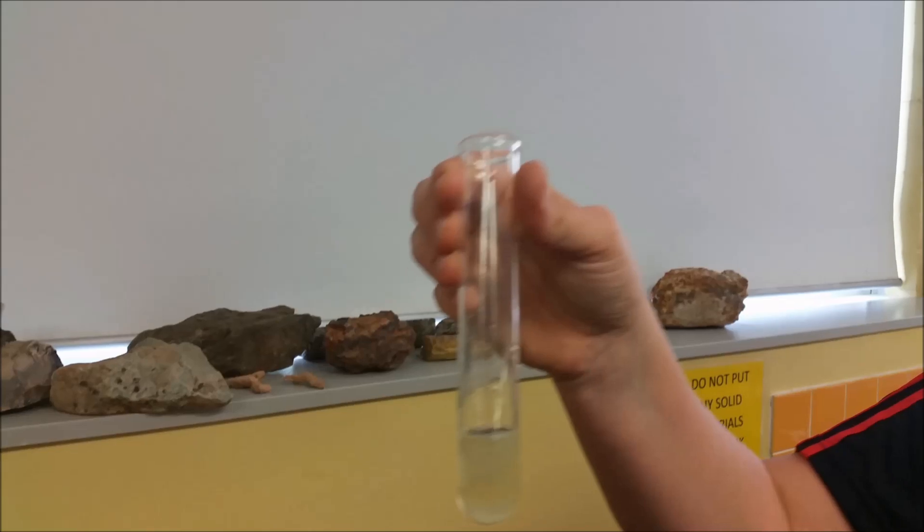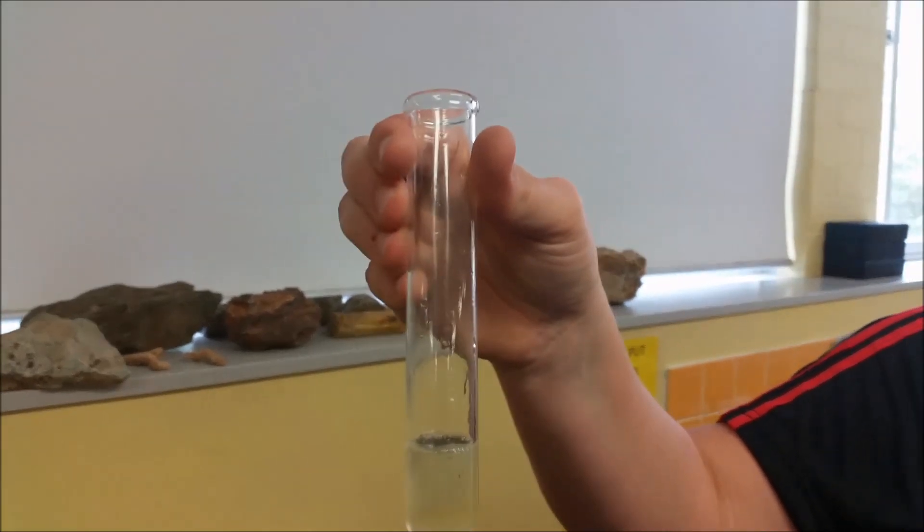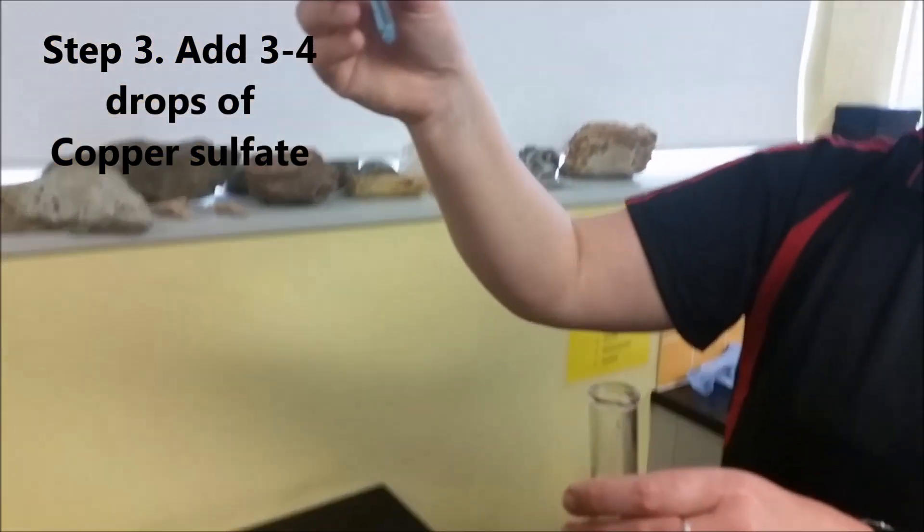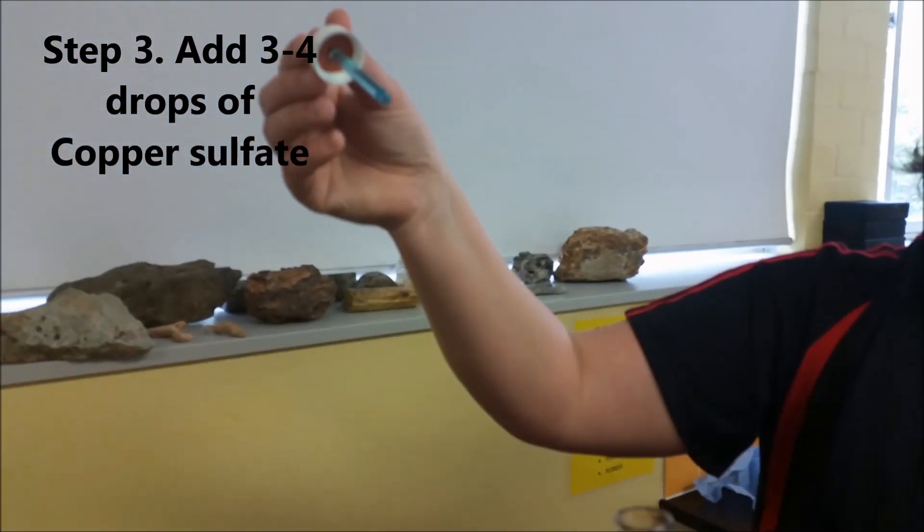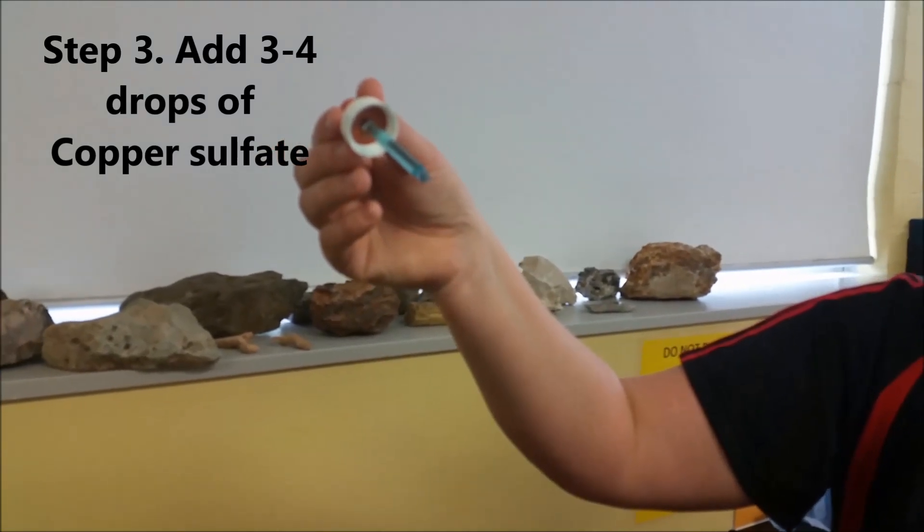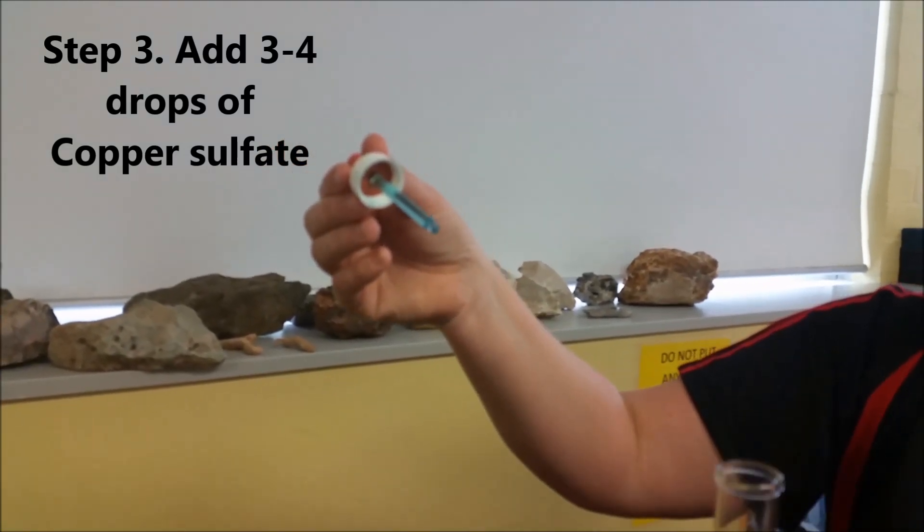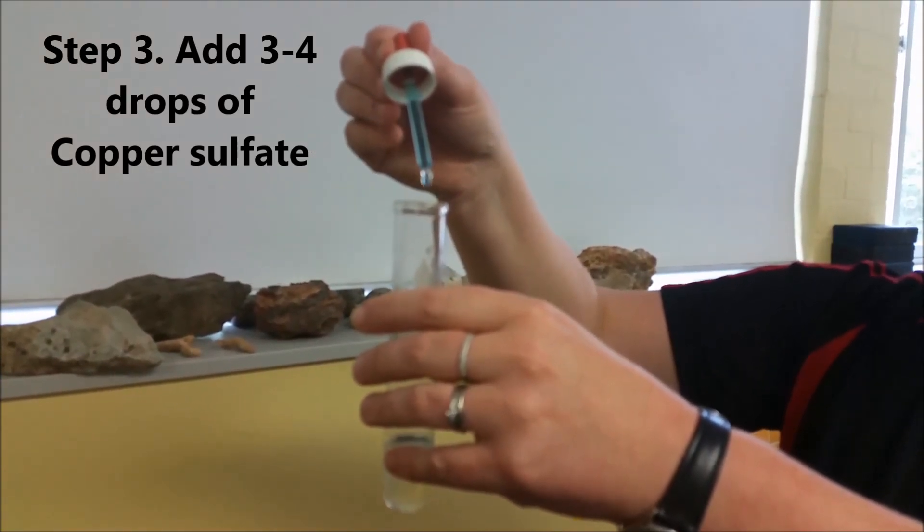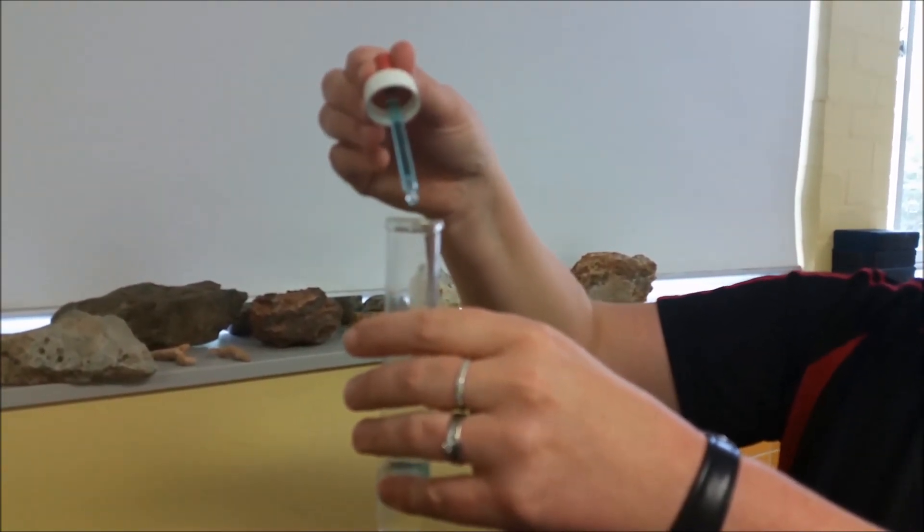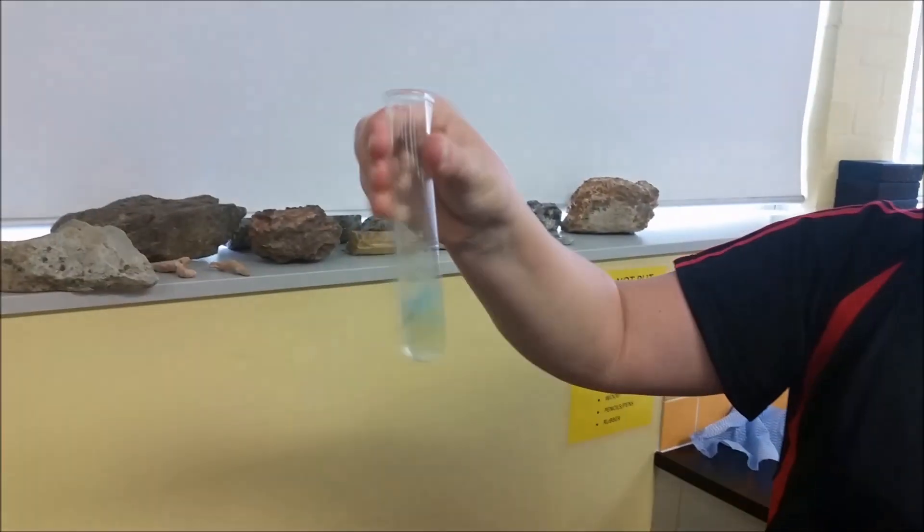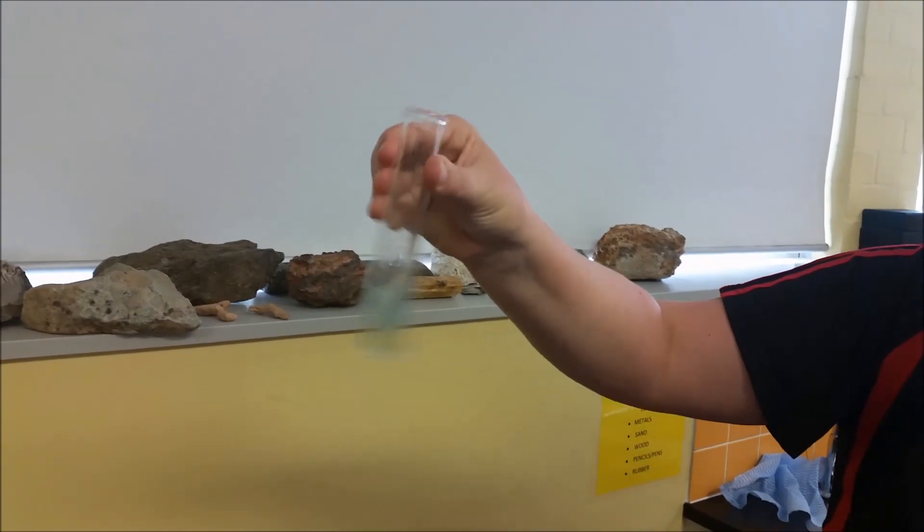And then you add the second reagent, and this is important to add it in this order. The second reagent is copper sulphate. You guys have seen this before, it's that blue solution. But you only need about three or four drops of this. So the sodium hydroxide, one pipette full, mix, then three to four drops. I might do a little bit more because I've got quite a lot of the copper sulphate. And then give it a mix.